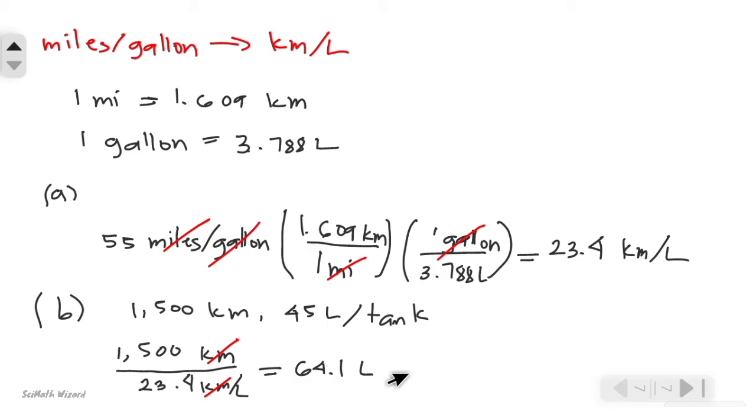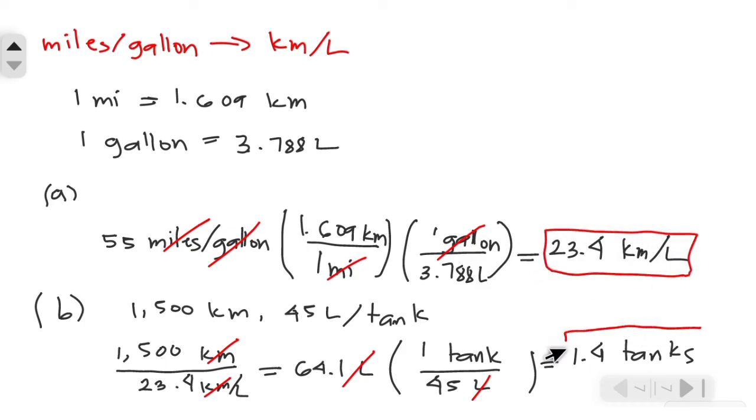We can use 45 liters per one tank, so cancel out the unit liters. Dividing 64.1 by 45 liters, the liters are cancelled out, and we get a value of 1.4 tanks. These are our final answers: part A and this is for part B.